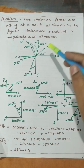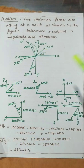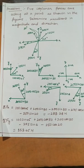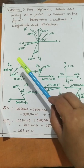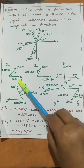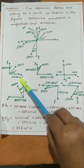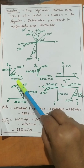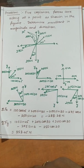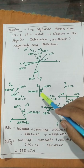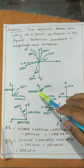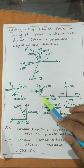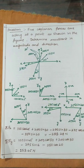The first force is 100 N at 45 degrees. Resolving it: the x-component is 100 cos 45 and the y-component is 100 sin 45. Next, the 200 N force makes an angle of 30 degrees with the y direction, so the y-component is 200 cos 30 and the x-component is 200 sin 30.